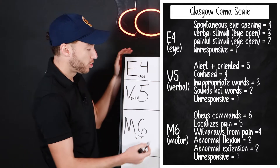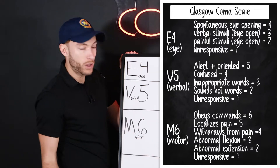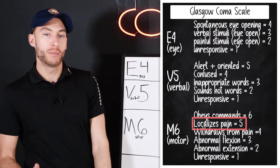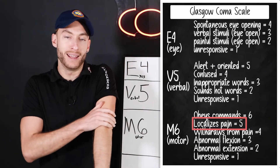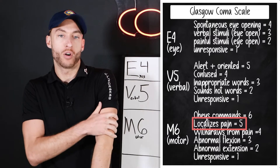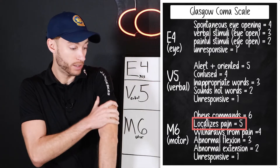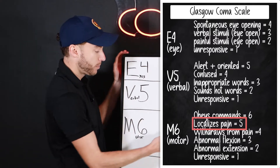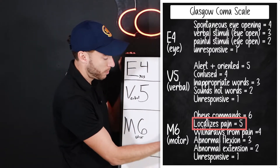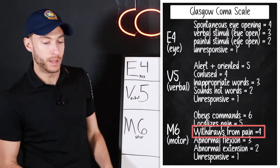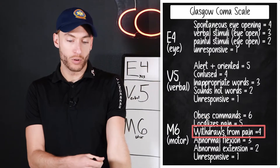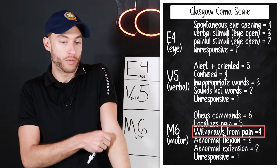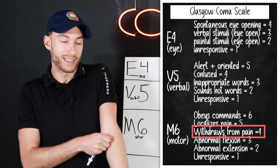So six is obeying commands and one is unresponsive. Five means the patient is able to localize where the pain is — for example, if they have an arm injury they reach toward that arm. Four, withdrawing from pain, means if you were inserting an IV and the patient started to pull away, they're withdrawing from the pain but can still sense it.